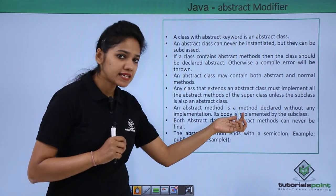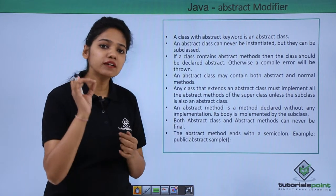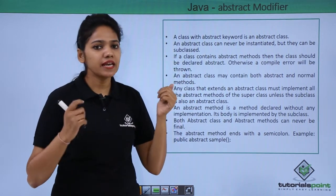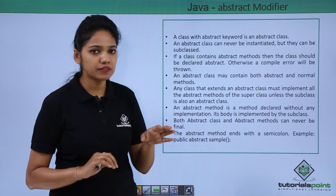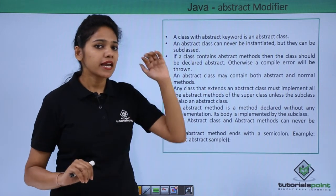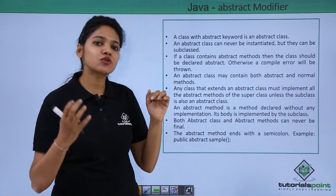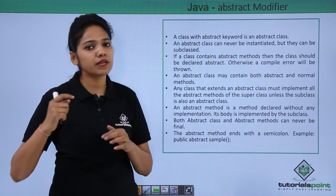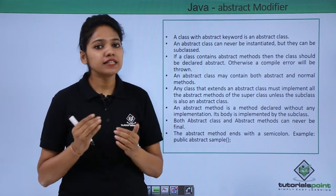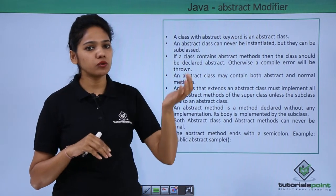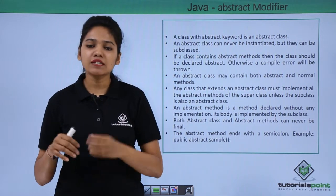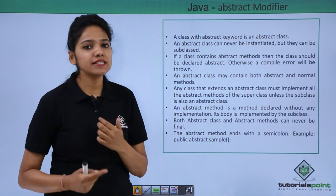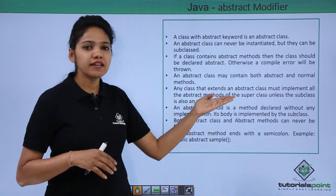Any class that extends an abstract class must implement all the abstract methods of that class. For example, if class A is abstract and class B is a normal class, and B tries to call the methods of abstract class A, then B must implement each and every abstract method of A. A normal class extending an abstract class must implement all its abstract methods, unless the subclass itself is also an abstract class.